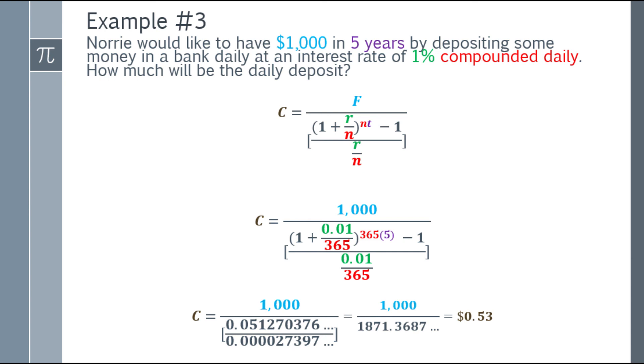Going back to the question, how much does Nori need to deposit daily to get $1,000 in 5 years with an interest rate of 1% compounded daily? That will be 53 cents, dollars.